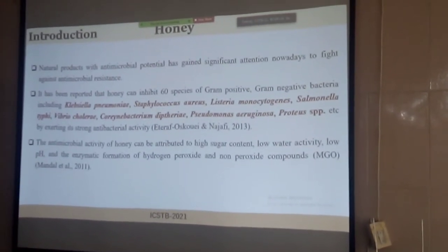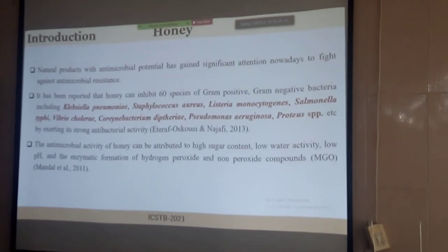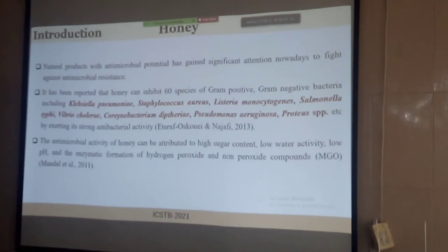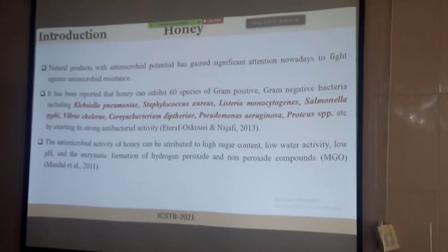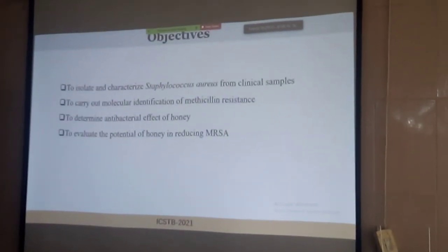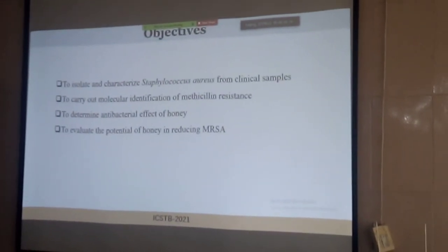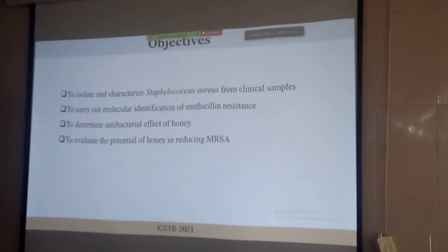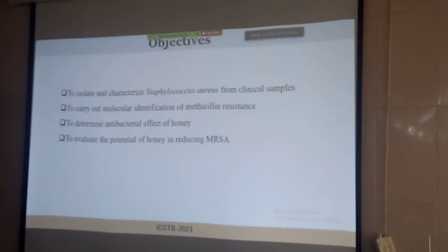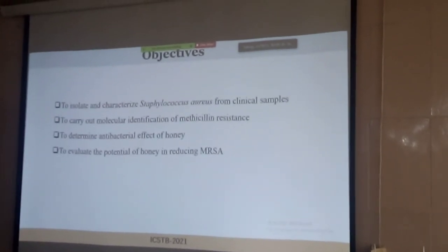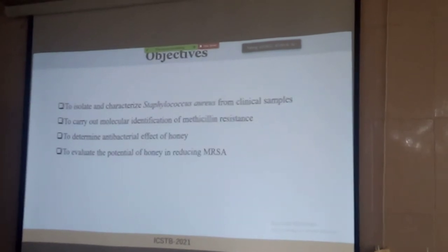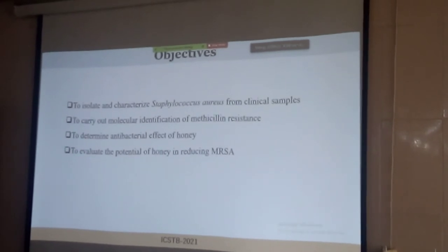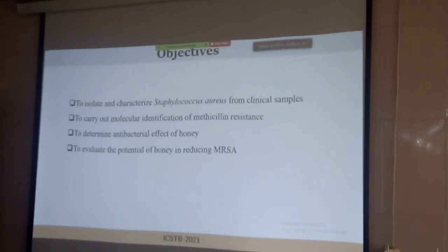How does honey exert its antimicrobial potential? Honey contains high sugar content and low water activity, low pH, and reactive oxygen species such as hydrogen peroxide and methylglyoxal. Here are the objectives of our study: we will first isolate and characterize Staphylococcus aureus from clinical samples. Molecular identification was carried out to detect the methicillin-resistant gene, and only MRSAs detected by molecular identification were subjected to honey experiments to see whether honey can inhibit those MRSAs under laboratory conditions.